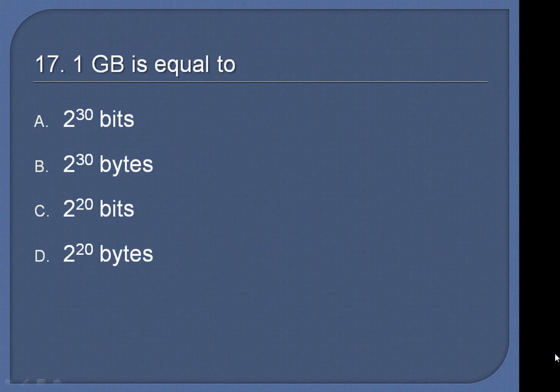Question 17: 1 GB is equal to: 2 to the 30th bits, 2 to the 30th bytes, 2 to the 20th bits, or 2 to the 20th bytes? Answer: 2 to the 30th bytes.